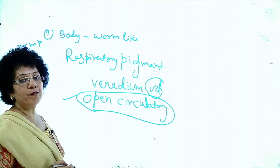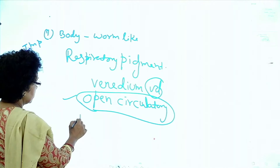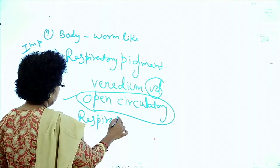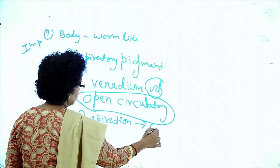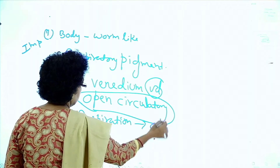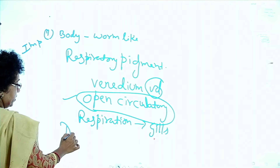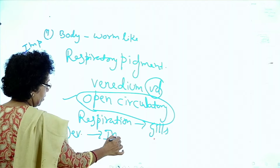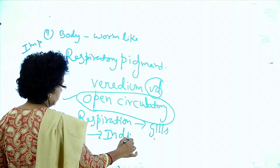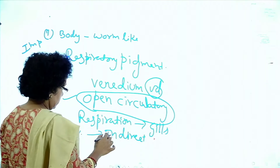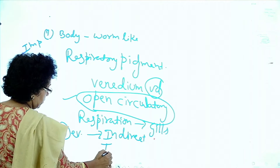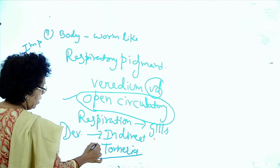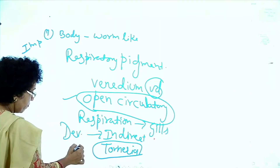The digestive system is complete. Respiration occurs by gills. Development is indirect, meaning a larval stage is present. The larva is called Tornaria — Tornaria larva. That is very important.